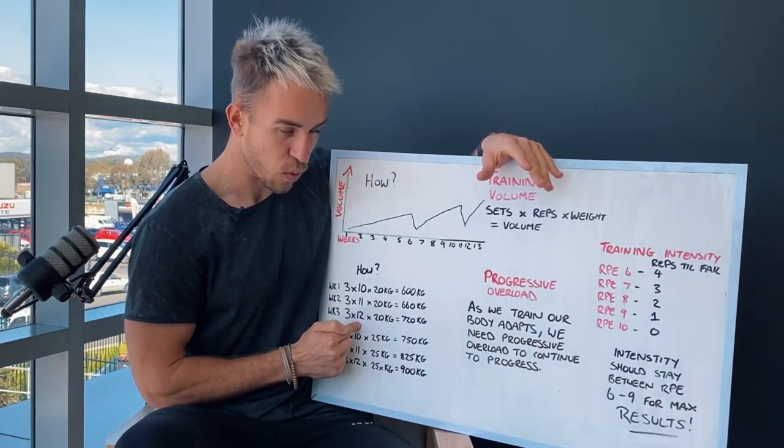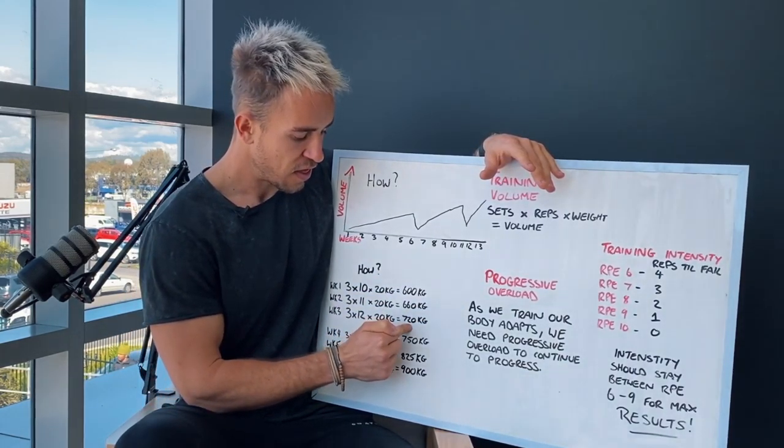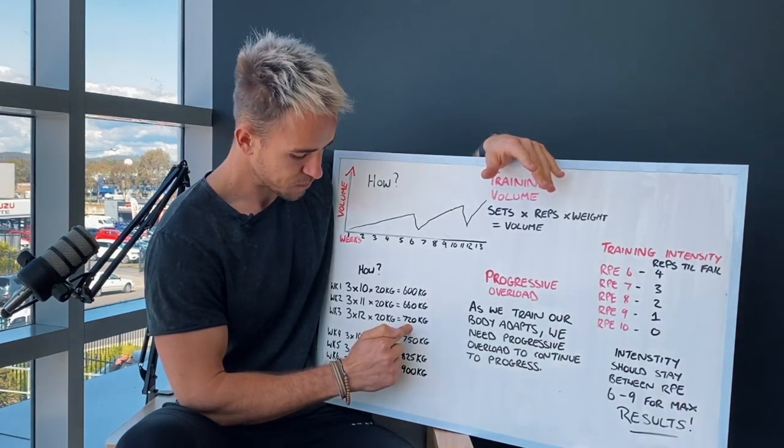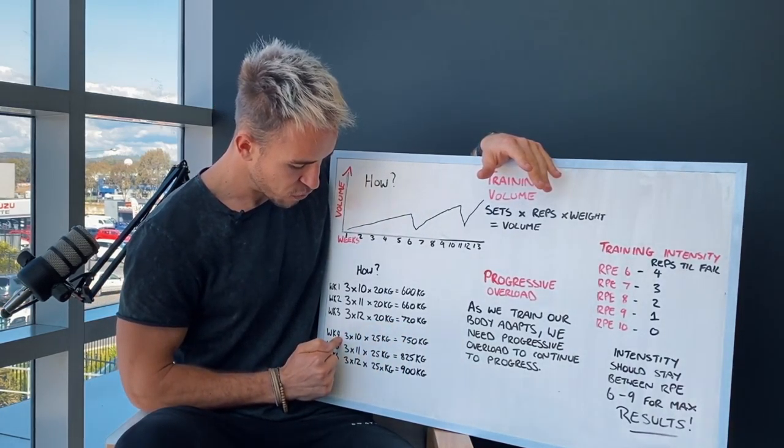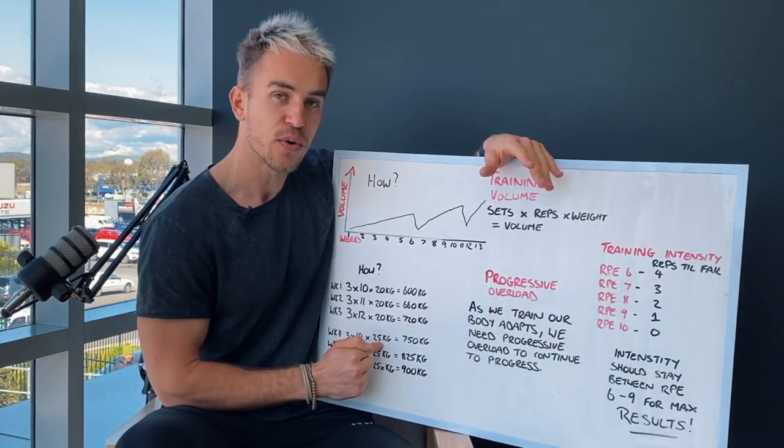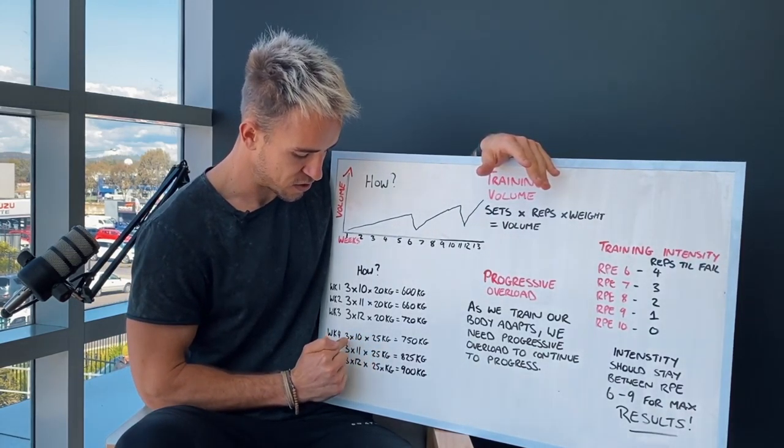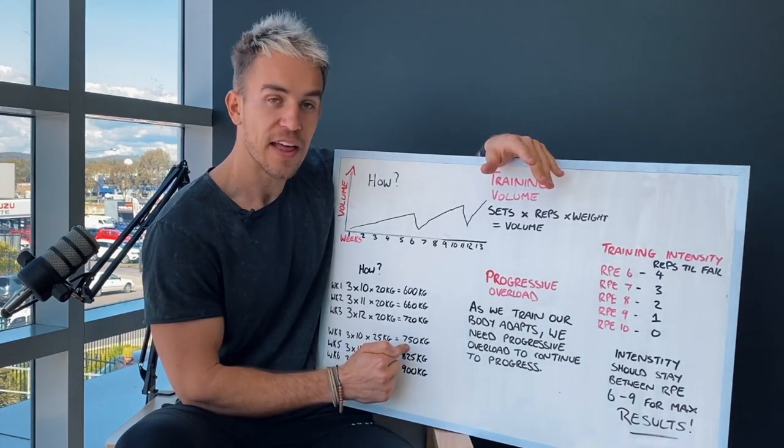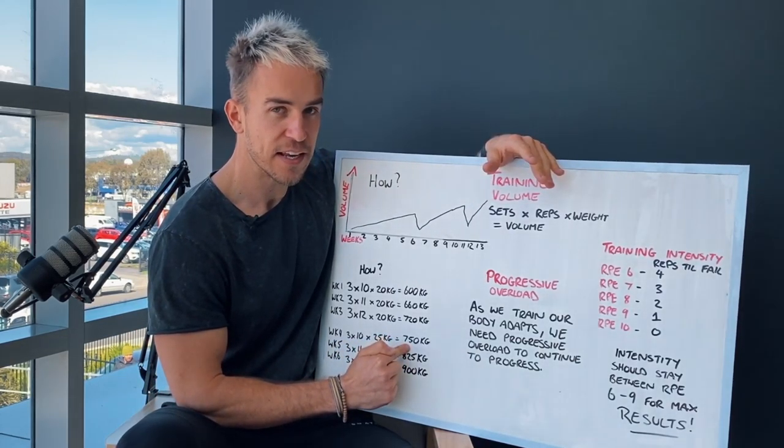So there's a little bit of progression in that training volume. Week three is three sets of 12. We've added another rep. That'll equal 720 kilos. Then week four comes, we go back down to three sets of 10, but we've increased the weight. So now three sets of 10 at 25 kilos, that'll equal 750 kilos.